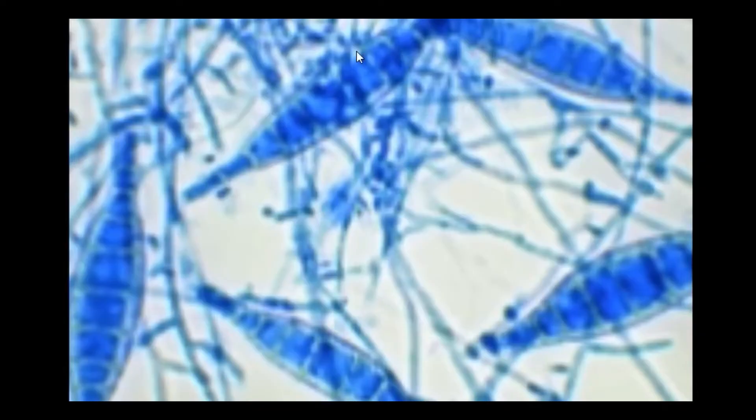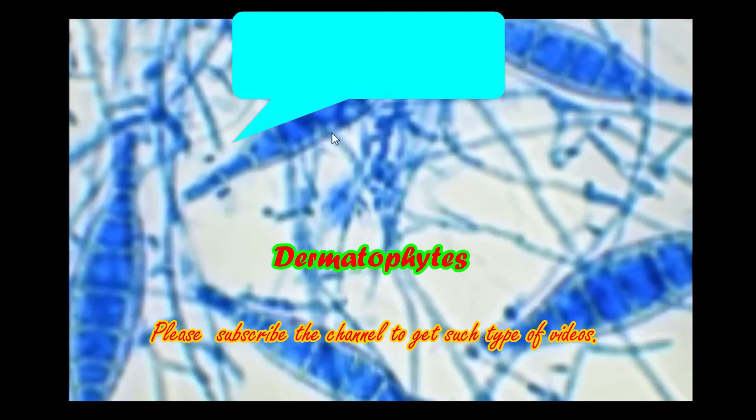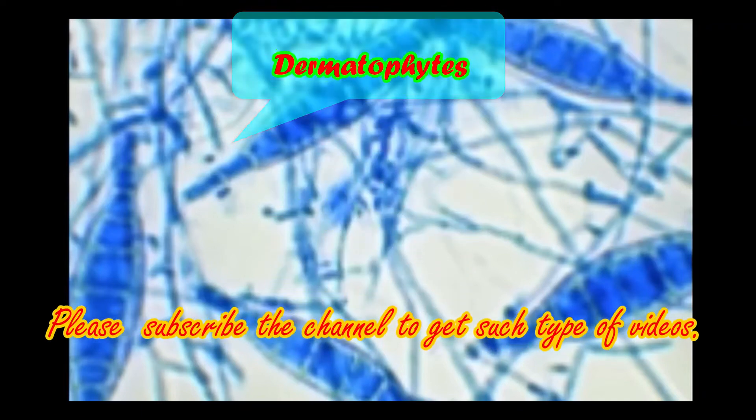Here you can see cotton-like pigmented colonies. Now let's try to observe the spores — here you can see scanty spores. And about macroconidia, spindle shape — this one, spindle shape. In this way we can identify Microsporum.